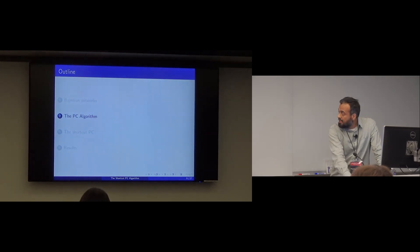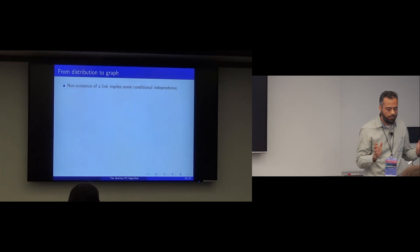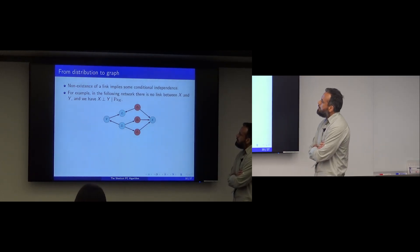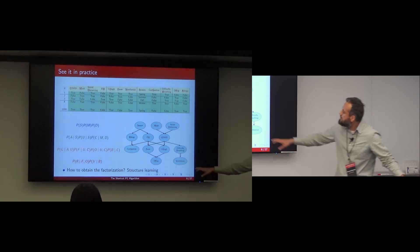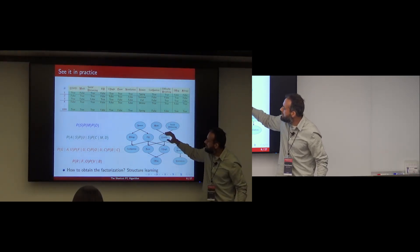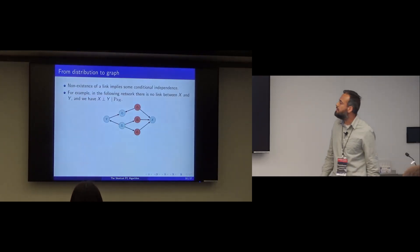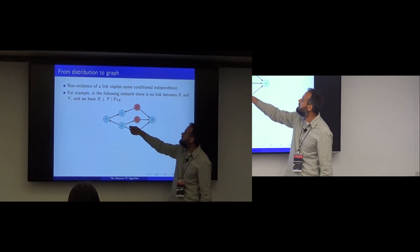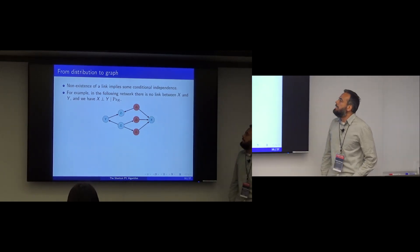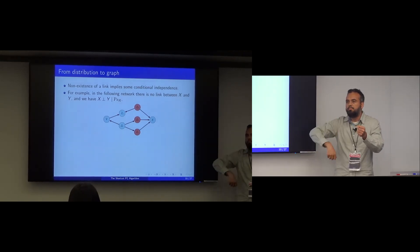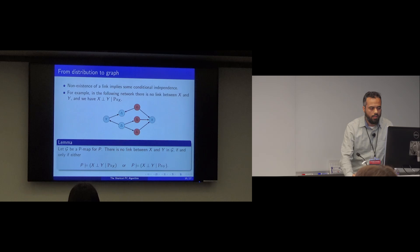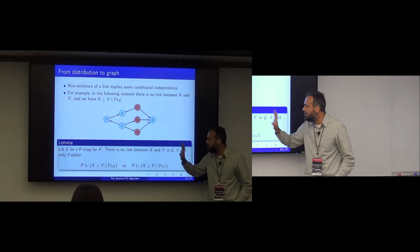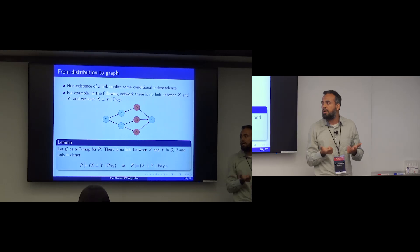We have several algorithms for learning the graph from data. I want to focus on the most well-established one: the PC algorithm. The key idea is that if there is no link between two nodes in the graph, it means one variable becomes independent of the other given its parents. If X and Y have no link, then conditioning on the parents of X — or the parents of Y — will make them independent.